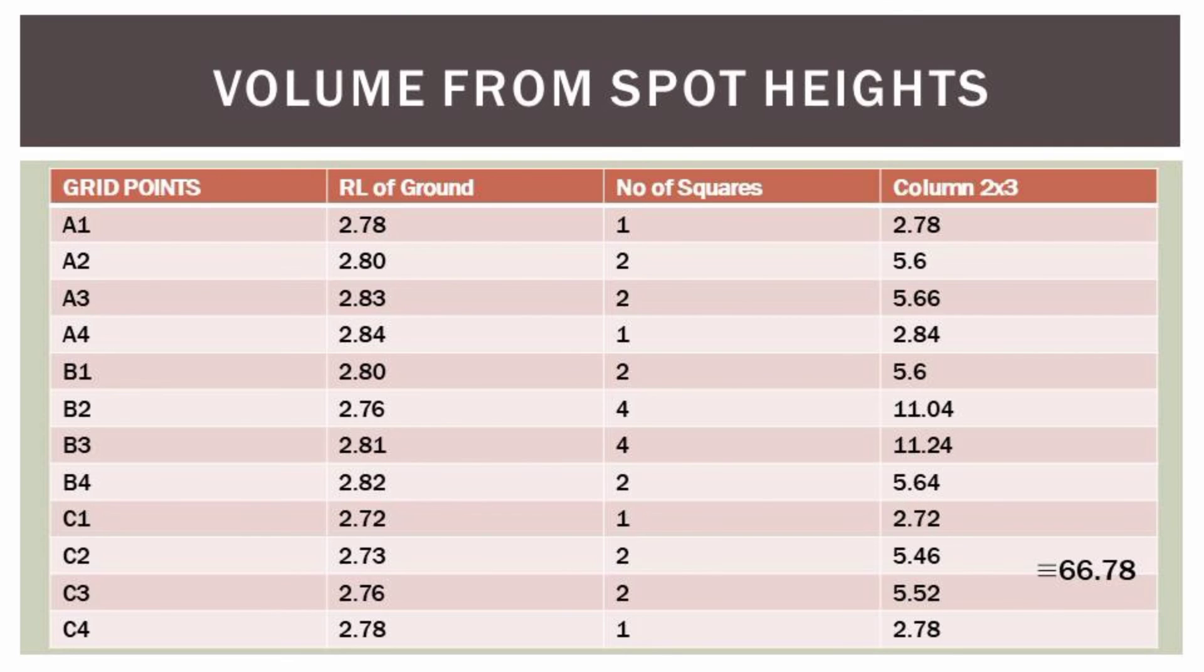Having done that, we go back to the table where on the last column our levels are multiplied by the number of squares, and the total is found by adding all those numbers.